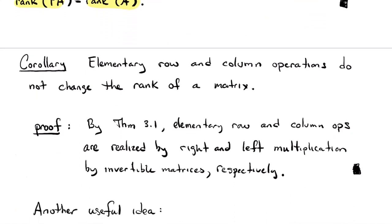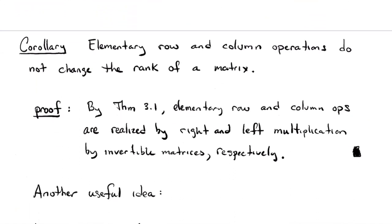An important corollary — one of the main results of this section — is that if you apply elementary row or column operations to a matrix, you don't change its rank. Taking a matrix and performing any elementary row operation or any elementary column operation doesn't change the rank. This is true because in Section 3.1, we proved that you can perform elementary row and column operations by multiplying on the left or right by suitable invertible matrices, and we just proved that multiplying by invertible matrices doesn't change the rank.